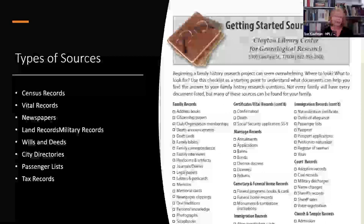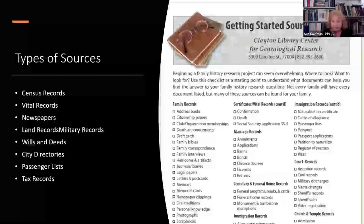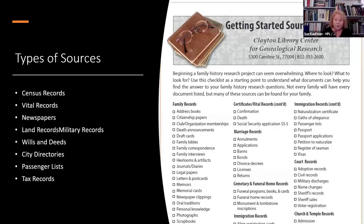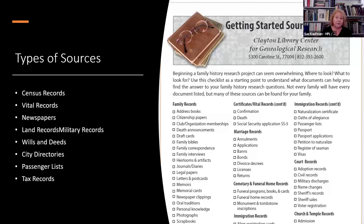Your handout also includes a getting started source checklist. It looks overwhelming — you probably don't know what a lot of these records can do for you, what the parameters are, and what they contain. A military record, for example — a pension file might not have a birth certificate, but it might list when someone was born or how old they were when they applied for a pension. There are all kinds of records: census records, vital records. We'll go through a few of these during this presentation.